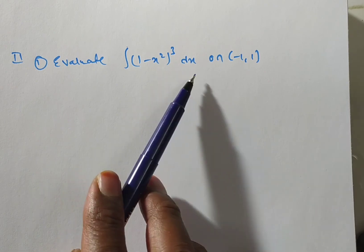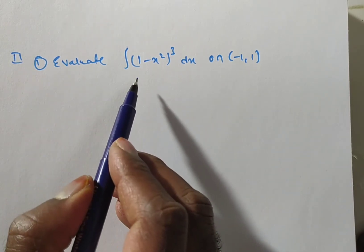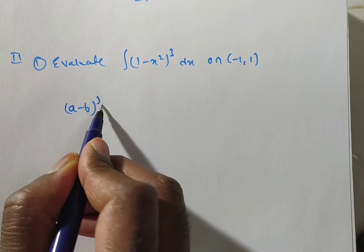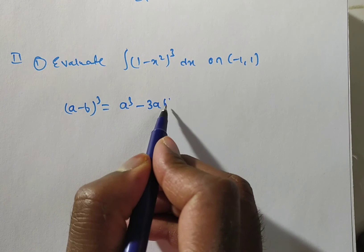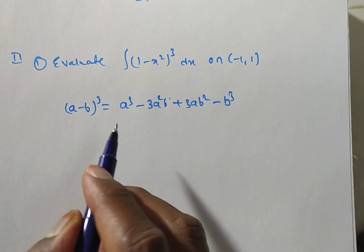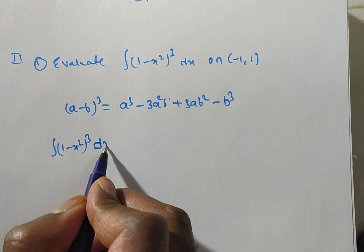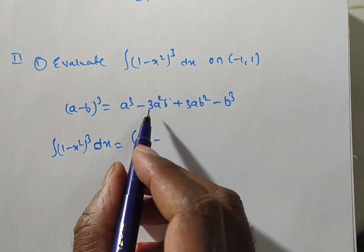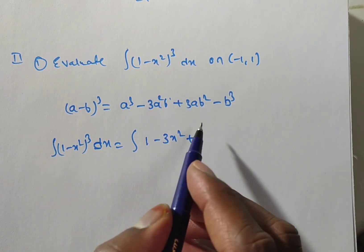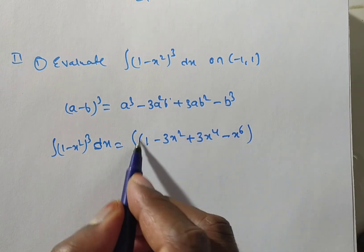Next: evaluate integral of (1 minus x squared) cubed dx on the open interval (minus 1, 1). They have not given x to the power of n directly, so we expand using the identity (a minus b) cubed equals a cubed minus 3a squared b plus 3ab squared minus b cubed, where a equals 1 and b equals x squared. So (1 minus x squared) cubed equals 1 minus 3x squared plus 3x to the power of 4 minus x to the power of 6.